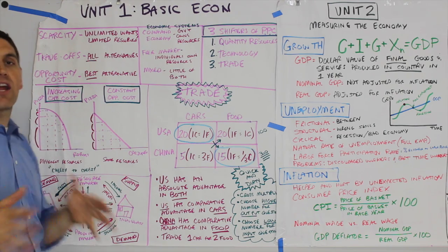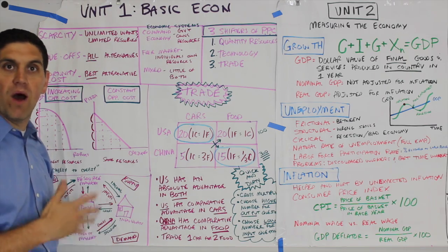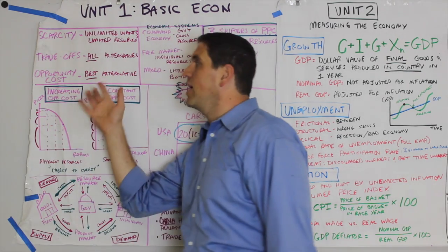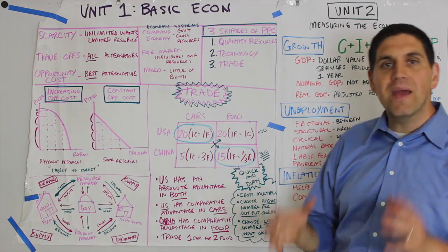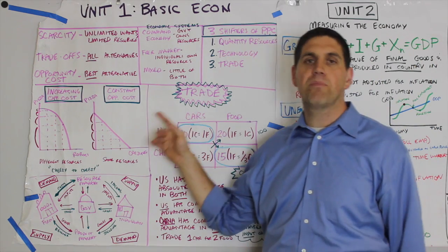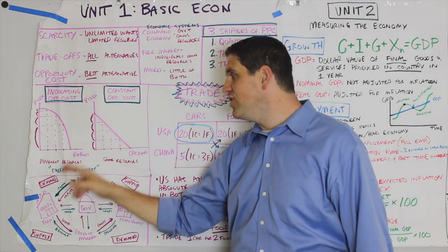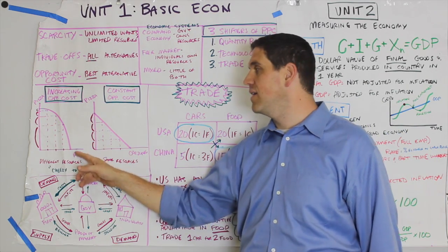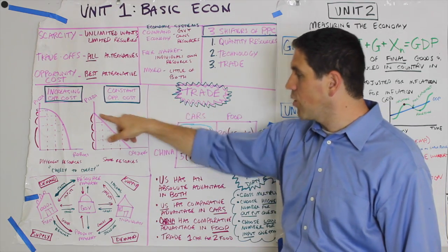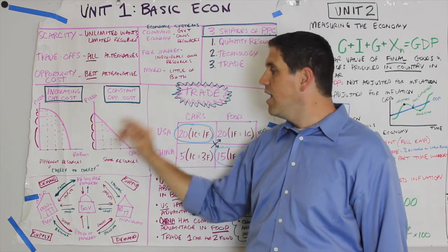We're looking at scarcity. Scarcity is the first question on the test — it's usually talking about unlimited wants and limited resources. The test might also talk about trade-offs or opportunity costs. The big trick in Unit 1 is the production possibilities curve. A bowed-out curve shows increasing opportunity cost and the law of increasing opportunity cost. A constant or straight-line PPC shows constant opportunity cost.